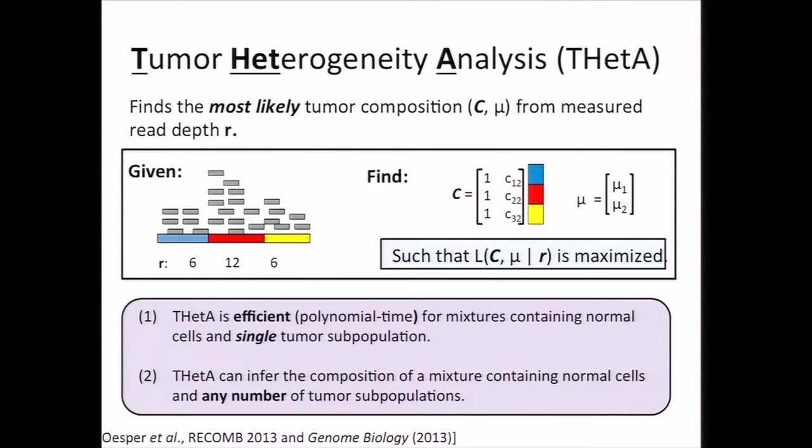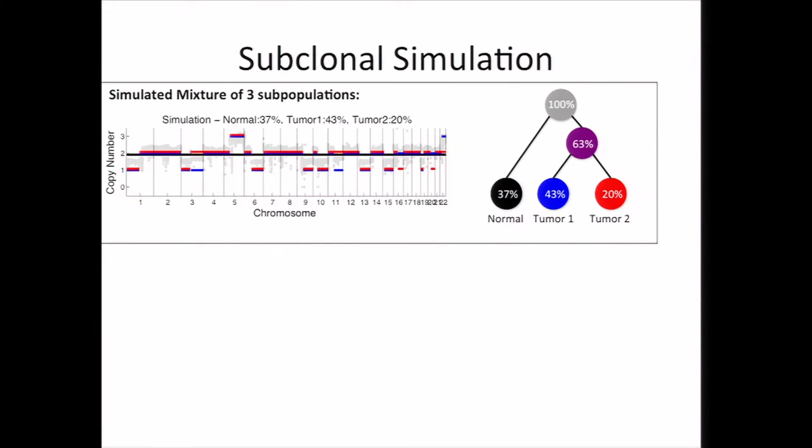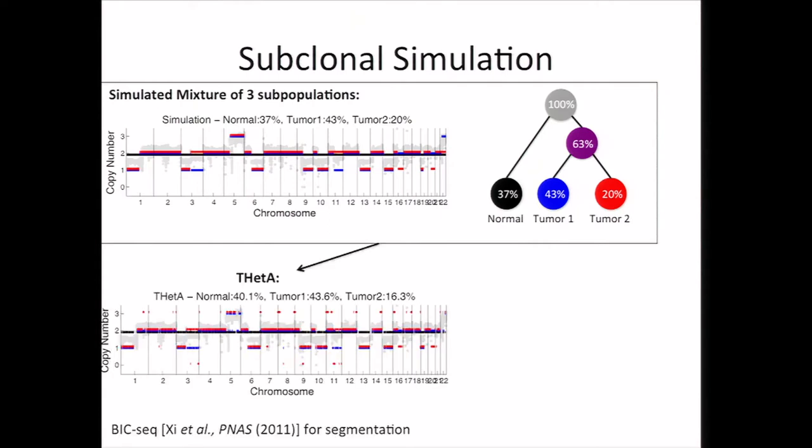To demonstrate the efficacy of THetA, let's take a look at some simulated data. This is a simulation where I created a mixture of three different populations — normal cells and two different tumor populations comprising 43 percent and 20 percent of cells. What you see here are the actual copy number profiles for the different populations, where the color corresponds to which population it comes from. We applied THetA to this dataset and found we did pretty well. THetA inferred the tumor purity within three percent of the true purity, and while there's some noise in the copy number aberrations predicted, we were able to recover most of the large copy number aberrations. For comparison, we also applied ABSOLUTE to this same simulation.